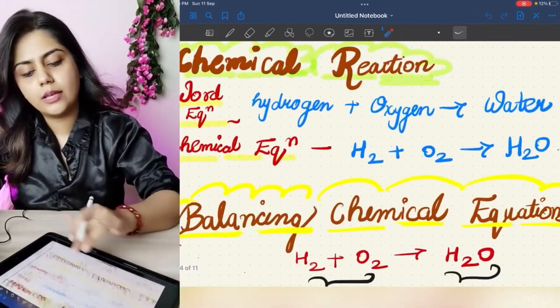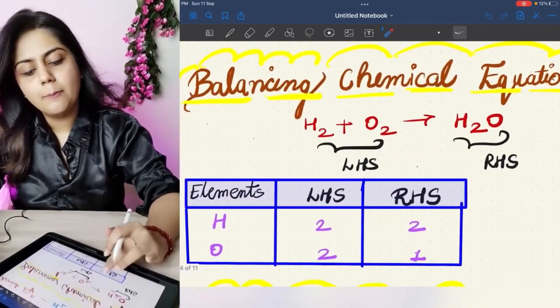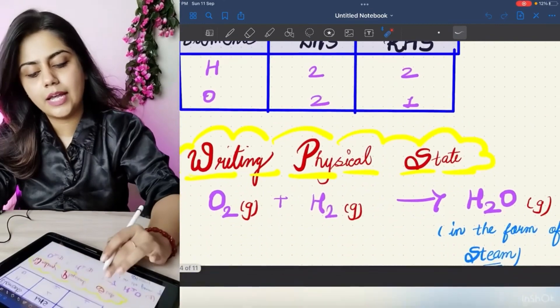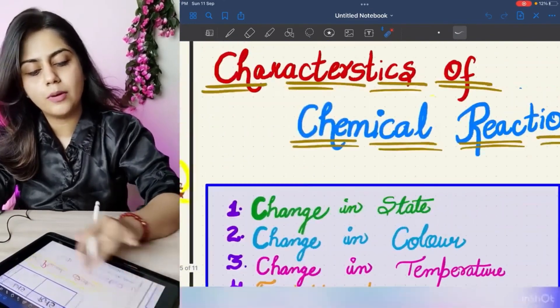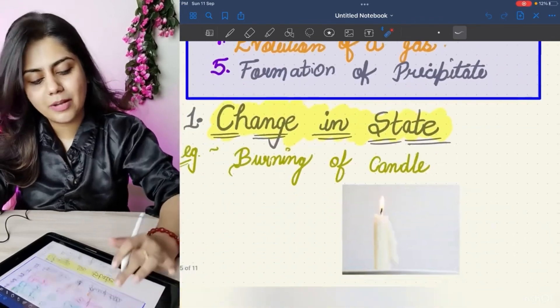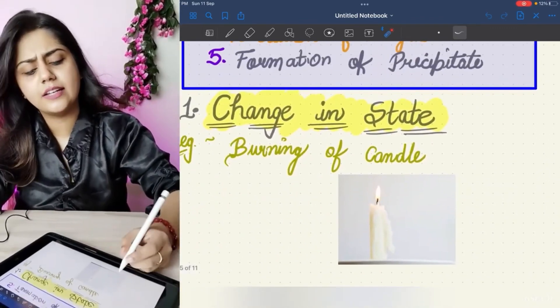Balancing is very good. You have to make a table in this way. You have to write the physical state. Also, you have to tell the characteristics. All the examples are mentioned. It will look very good in this way.